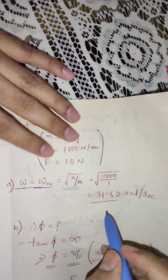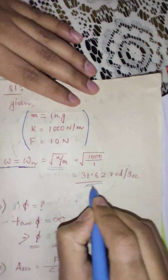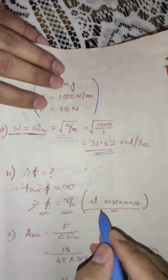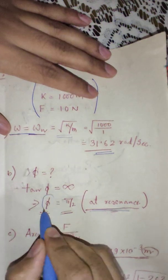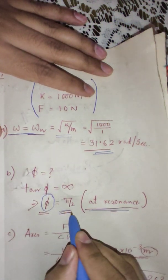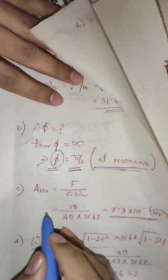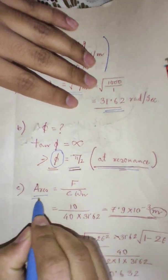And the simplest formula root over k by m, thereby I have found out the value of omega n. Next thing, at resonance the value of your phase angle is always 90 degrees, so I can directly write it. At resonance amplitude was asked to be found.